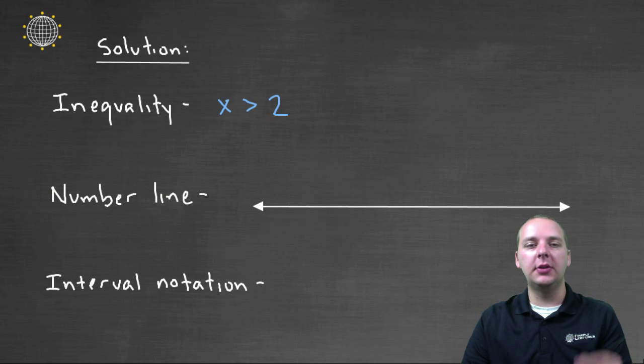Alright, now that's not the only way to express all those answers though. So next let's try to draw that on a number line. So here's zero, and then we'll have one and two. And I want to express all the x's strictly greater than two.